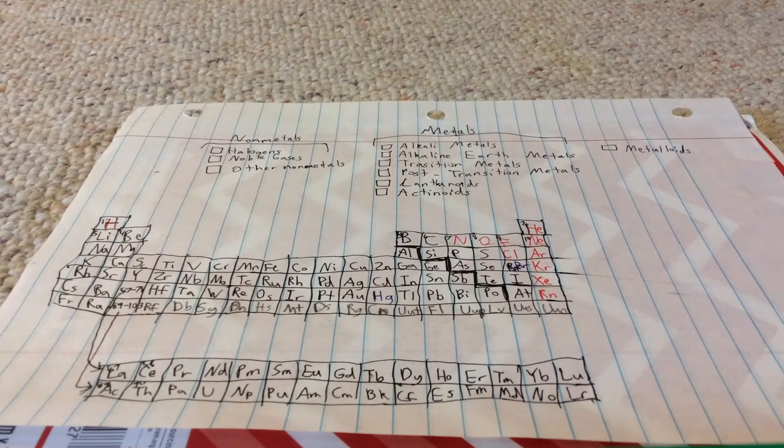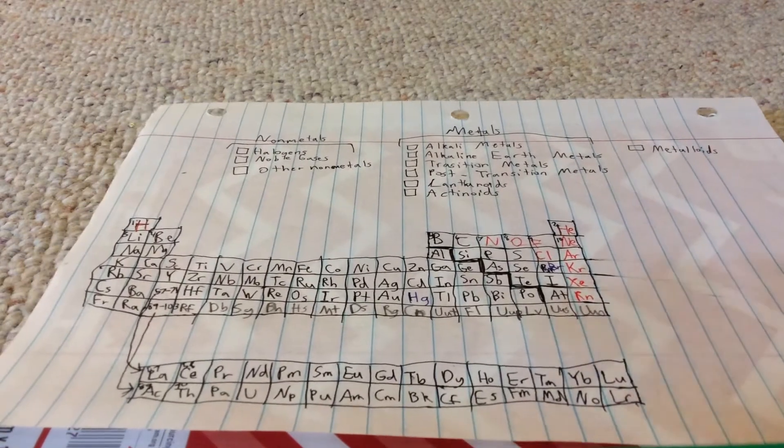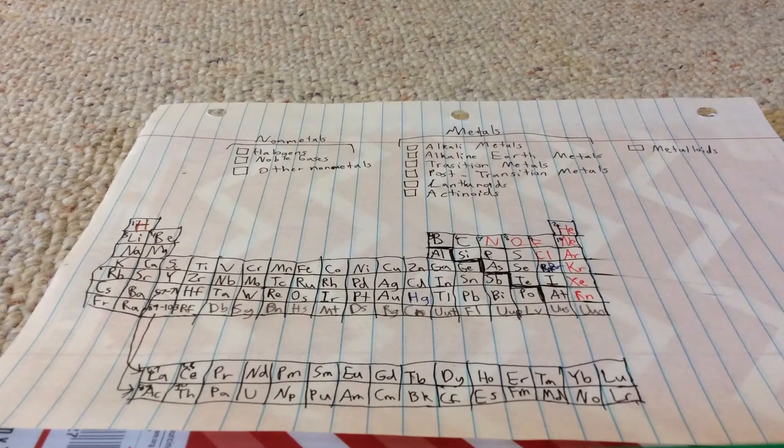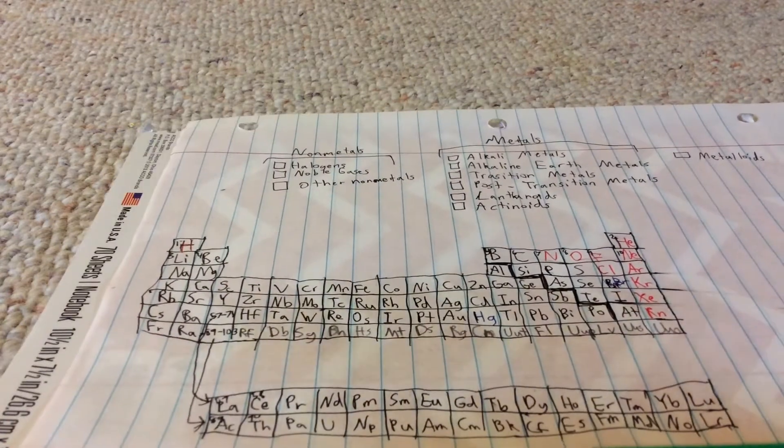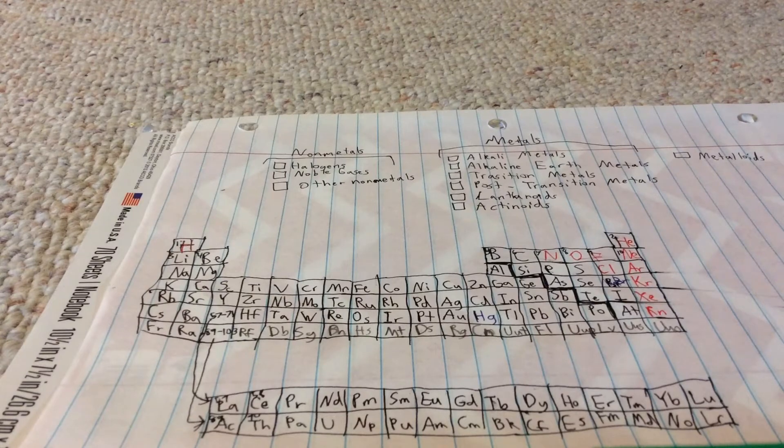We're gonna get crayons out. We're gonna need 10 different colors. So first one we're gonna be doing is the non-metal for halogens. You probably know where those are.